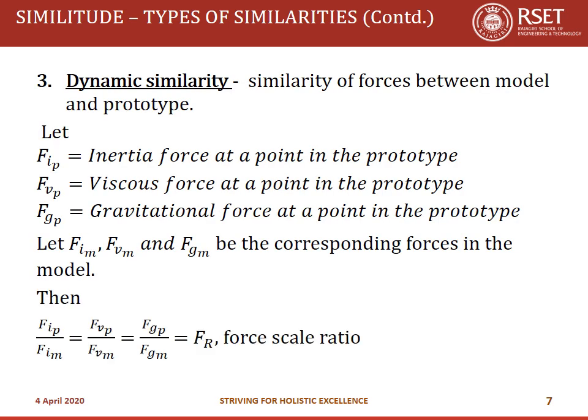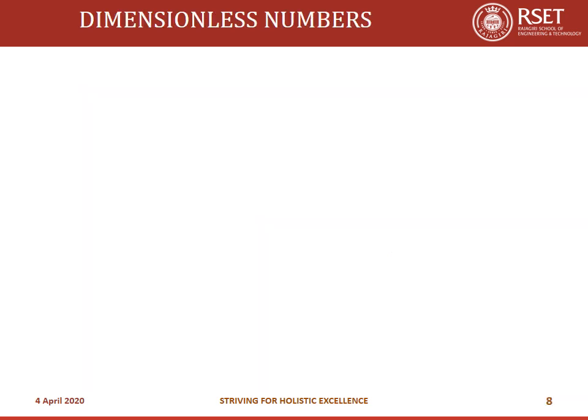Dynamic similarity means that the ratios of all corresponding forces between the prototype and model are equal: FIP/FIM = FVP/FVM = FGP/FGM = FR, the force scale ratio. That is what is meant by dynamic similarity between model and prototype.